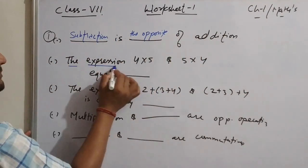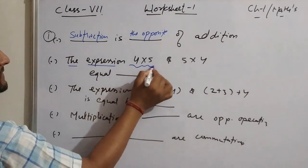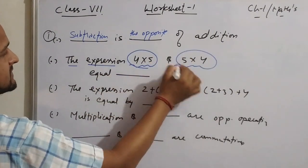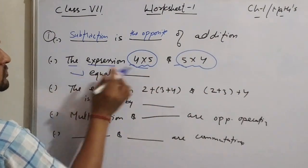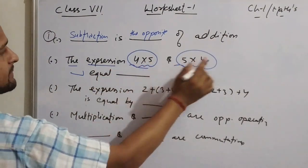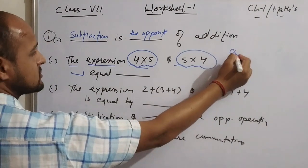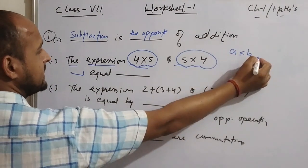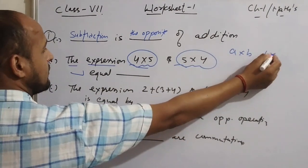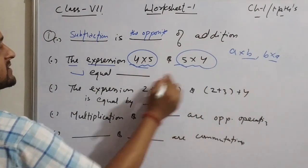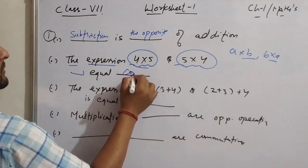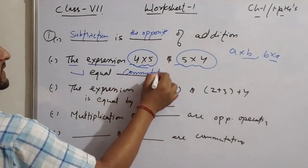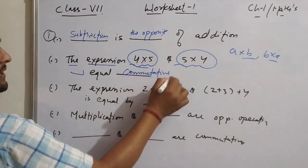The next expression: when we have two numbers and we change their order, this is the commutative property. So the answer is commutative.